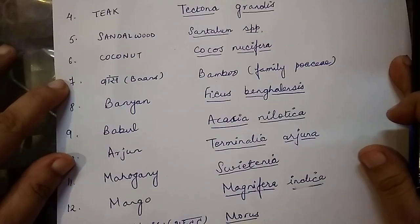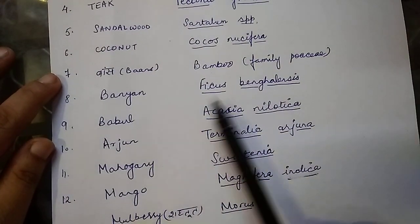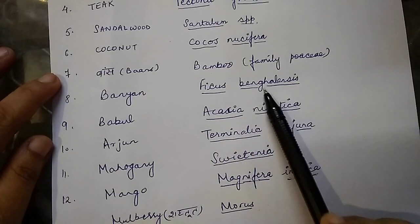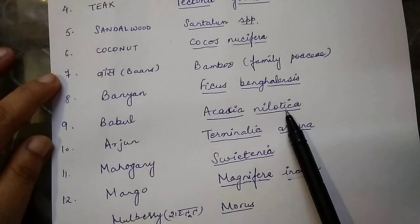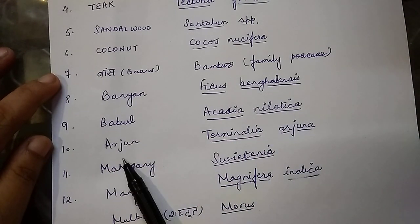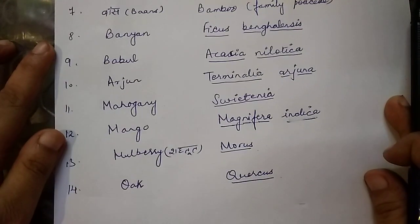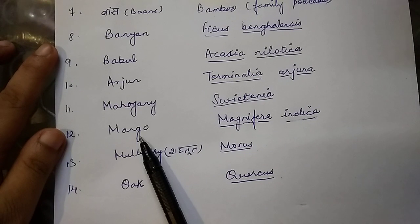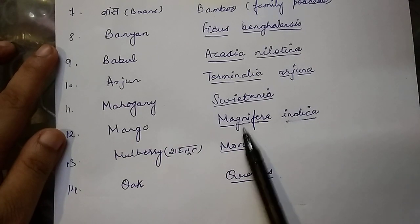Then we have Banyan, whose scientific name is Ficus benghalensis. Babool is called Acacia nilotica. Then Arjun, whose scientific name is Terminalia arjuna. Then Mahogany, belonging to Swietenia. And Mango, whose scientific name is Mangifera indica.